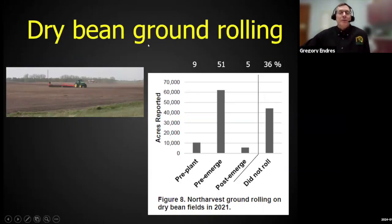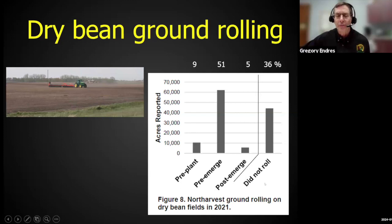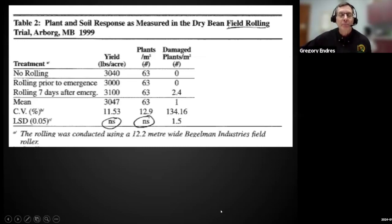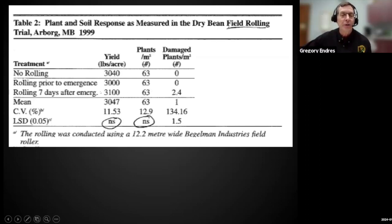Dry bean rolling: in our survey from 2021, we asked people whether they rolled as part of their dry bean production strategy. About a third did not. Those that replied indicated the most common time was pre-emergence rolling right after planting. We relied on the Canadians for some information — this is data from Manitoba, a simple trial looking at no rolling compared to rolling right after planting or rolling after plants had emerged about a week after. As you'd suspect, if you roll when plants are up there's some damage, but interestingly plant density and more importantly yield were not affected by the rolling timing.